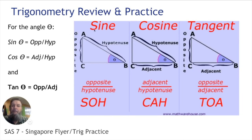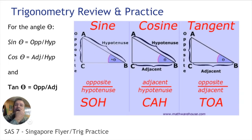Sine, as you can see here, is the ratio — sine of theta. Theta is that angle. It is the ratio of the opposite side over the hypotenuse. The opposite side is the one opposite that angle; that opposite side is AC. The hypotenuse is always the longest side. So sine of theta equals opposite over hypotenuse.